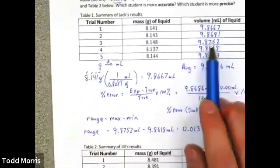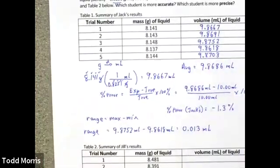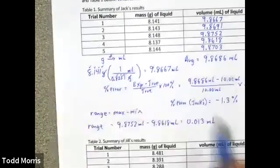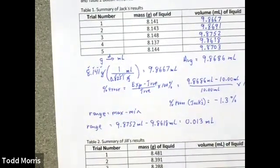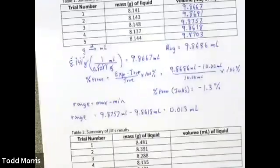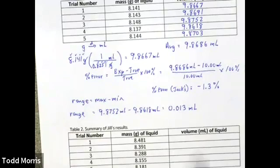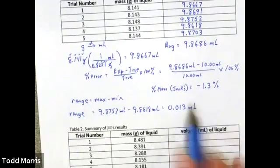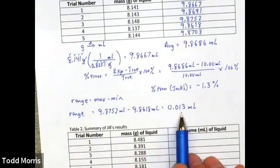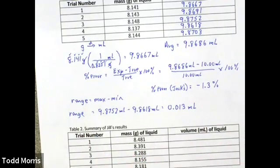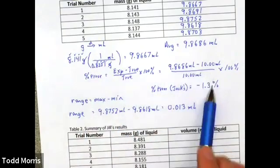So, for both percent error and range, percent error accuracy, range precision, we'd like to have numbers that are smaller, closer to 0. Then to compare Jack's accuracy and Jack's precision, we want to then compare that to Jill's results. And so, for that, we'll do exactly the same thing with Jill's data.